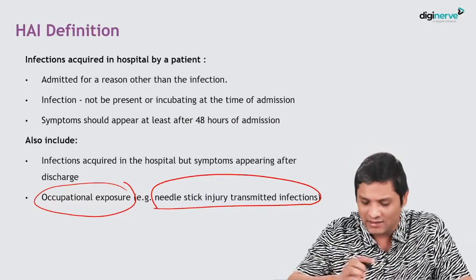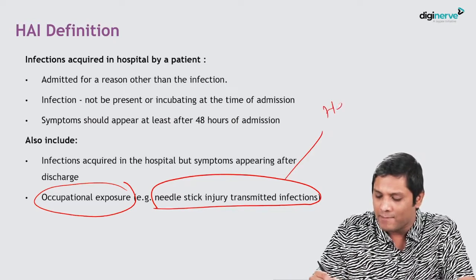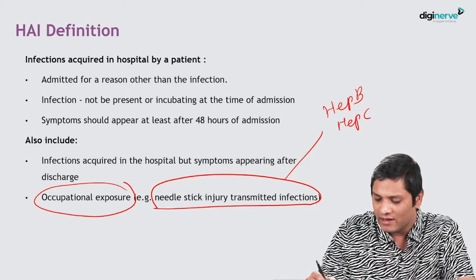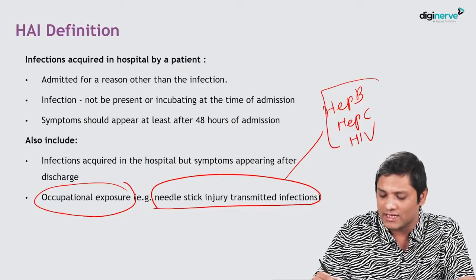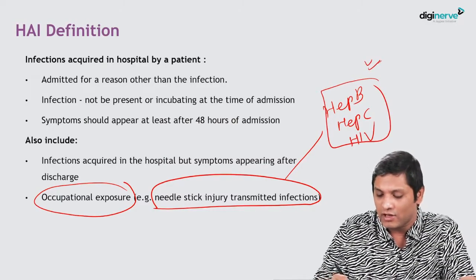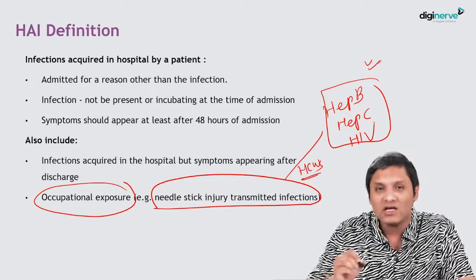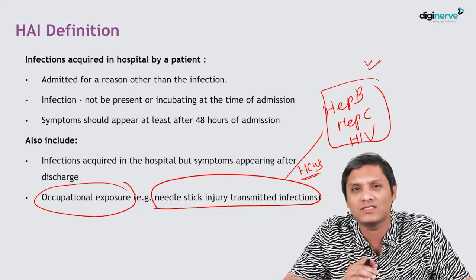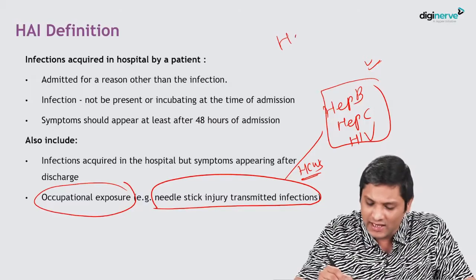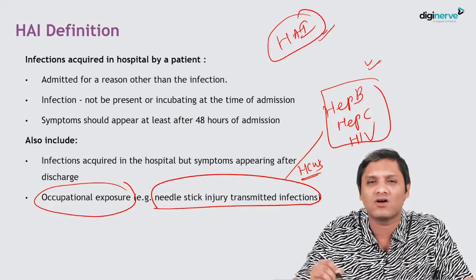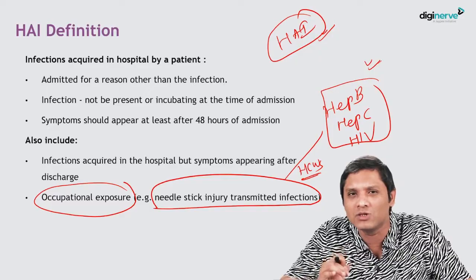Any kind of occupational exposure is included under HAI. The classical examples include Hepatitis B, Hepatitis C, and HIV — all of these can be acquired through needle stick injury to healthcare workers in the hospital. These are classical examples of HAI, hospital-acquired infection, also called healthcare associated infection.